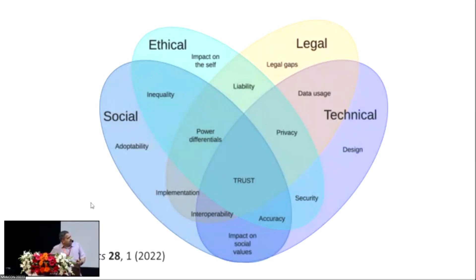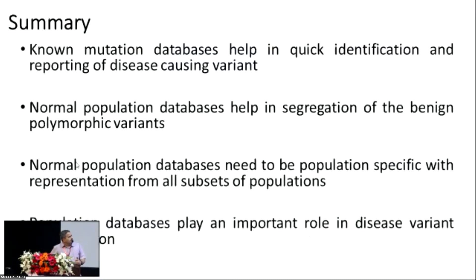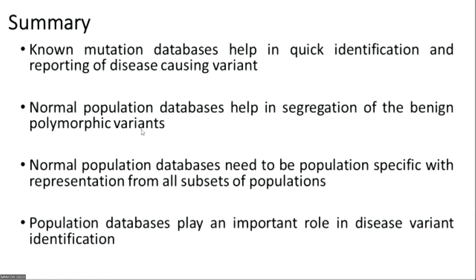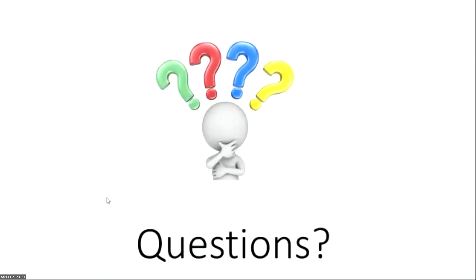In summary, known mutation databases are very helpful in the quick identification and reporting of disease-causing variants in diagnostics. Normal population databases help us segregate benign polymorphic variants, and these need to be population-specific for representation of different subsets of the population. They play a very important role in disease variant identification, and we give a lot of importance to the frequency of an allele in the population when interpreting a variant.